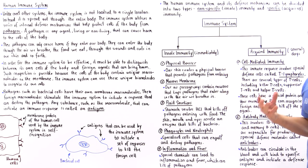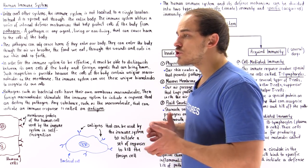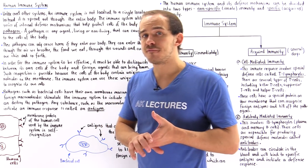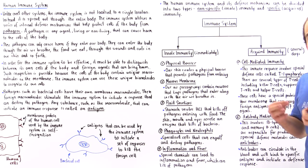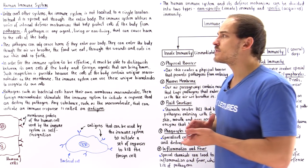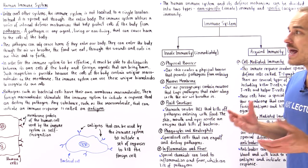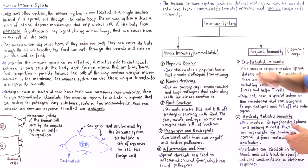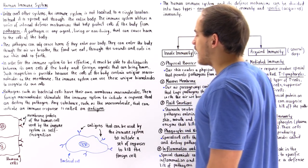Let's begin by discussing our innate immunity and its components, starting with the physical barrier — our skin. Our skin is the largest organ of our body, and one of its more important functions is to physically protect our body from different types of pathogens, for example UV radiation as well as bacterial cells and viruses. Our skin creates a physical barrier that prevents pathogens from entering our body and attacking our cells.